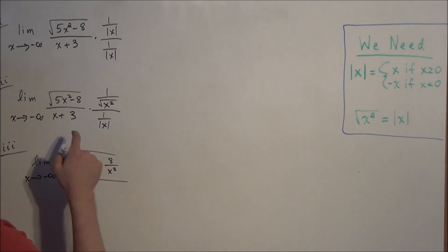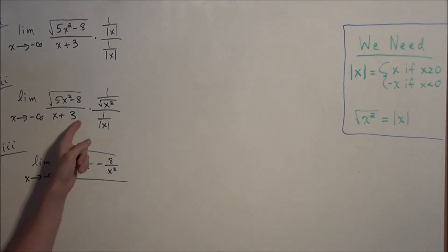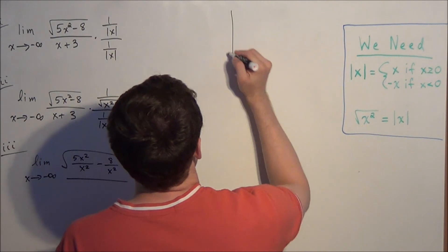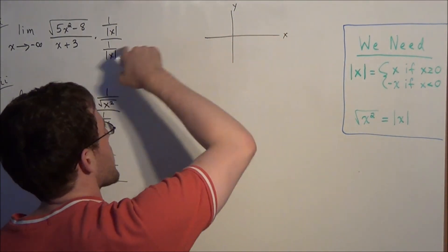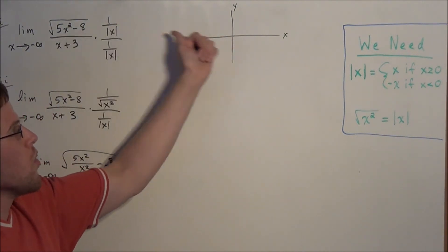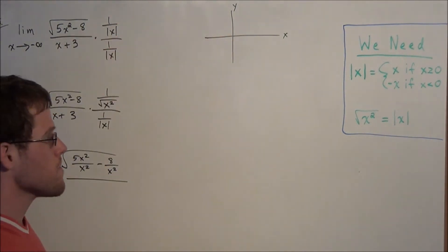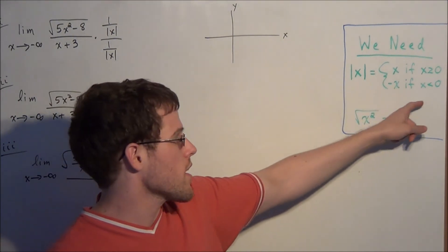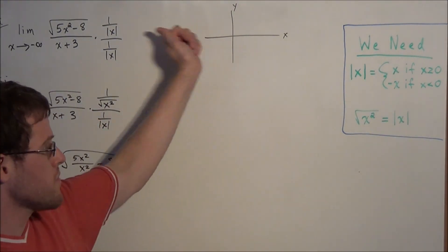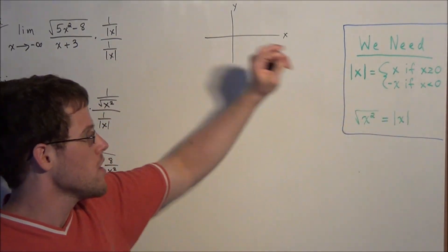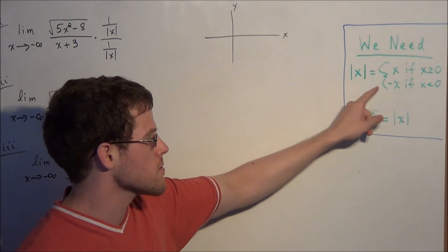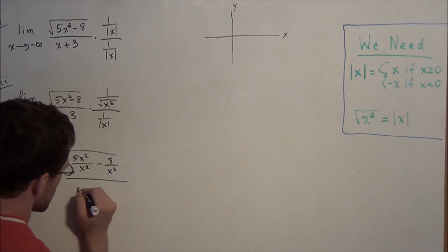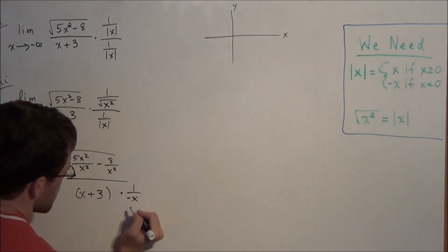Now this is where we need to be careful. We have x plus 3 times 1 over the absolute value of x in the denominator. Since we're looking at the limit as x approaches negative infinity, we're concerned with x values to the left of 0. The absolute value of x equals x when x ≥ 0, but equals negative x when x < 0. Since we're approaching negative infinity, we replace the absolute value of x with negative x. So we have x plus 3 times 1 over negative x.